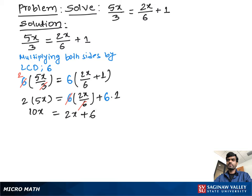Now we subtract 2x from both sides. Then we get 10x minus 2x which is equal to 8x, and 2x cancel out. So we get 6.